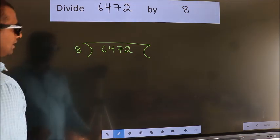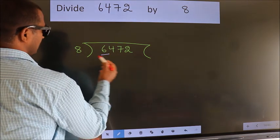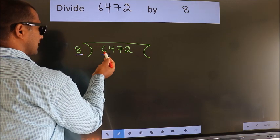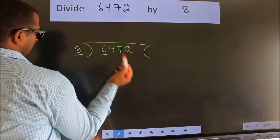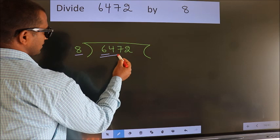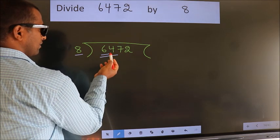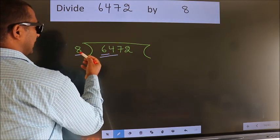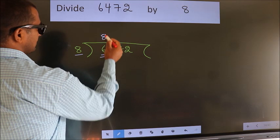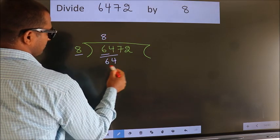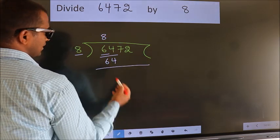Next. Here we have 6, here 8. 6 is smaller than 8, so we should take two numbers, 64. When do we get 64? In the 8 table. 8 times 8 is 64. Now, we should subtract.